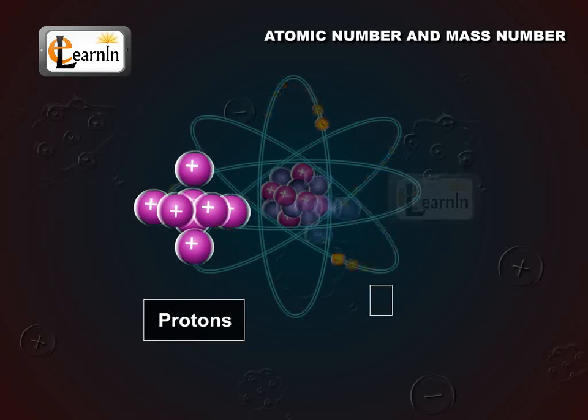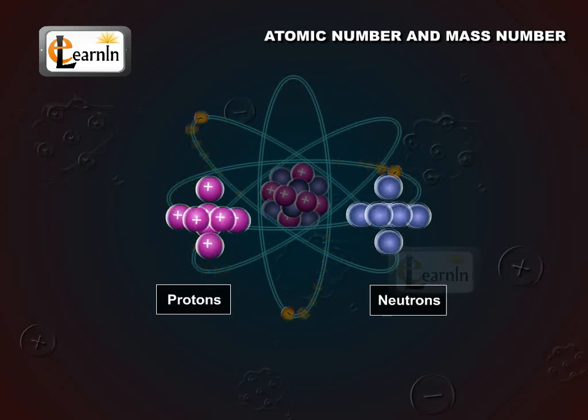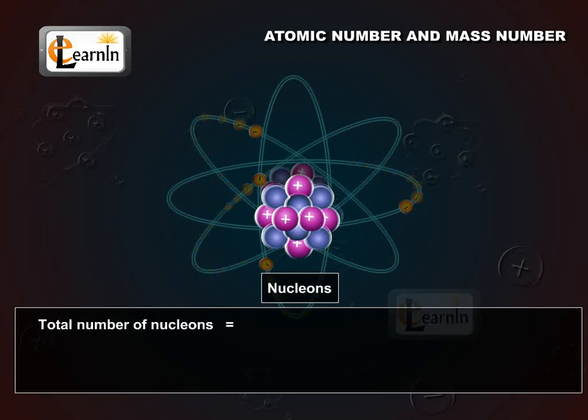While positive charge of the nucleus is due to the protons, the mass of the nucleus is due to protons and neutrons. Protons and neutrons present in the nucleus are collectively known as nucleons. The total number of nucleons is termed as mass number of the atom, represented by capital A.